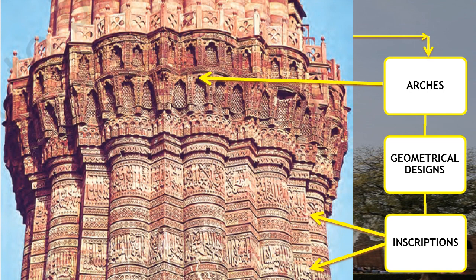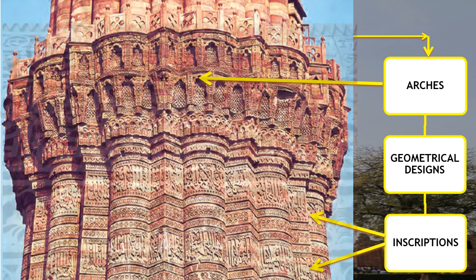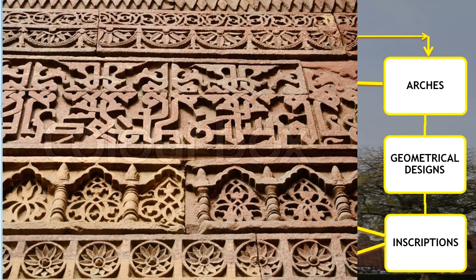Look at the designs and patterns on the building. We can see arches on it. You can see two bands of inscriptions written in Arabic, and you can notice the geometrical patterns and designs on the building. The surface of the building is curved and angular. All this required great precision, which was not easy at that point of time.